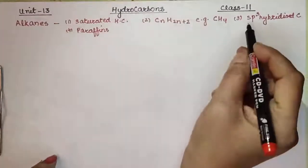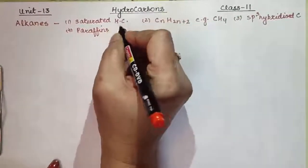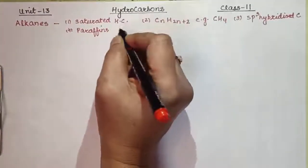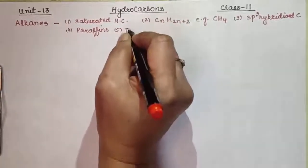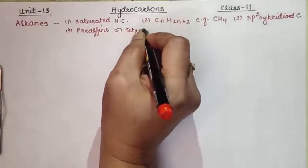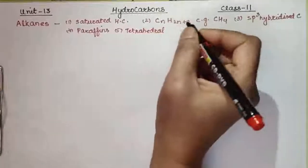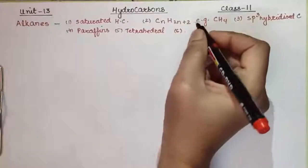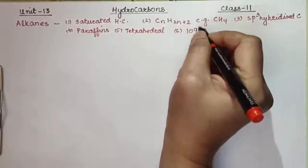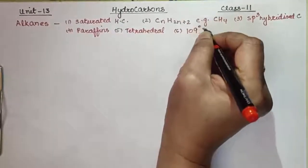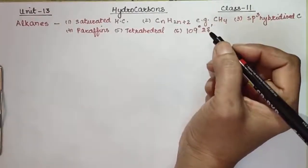When we talk about hybridization, sp3 hybridized carbon gives a tetrahedral geometry or structure. So in alkanes, tetrahedral structure remains. The bond angle in alkanes is 109 degrees and 28 minutes.